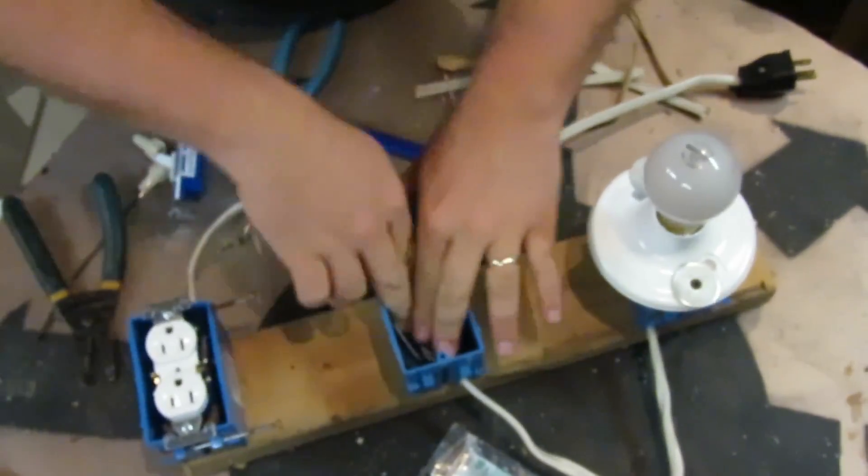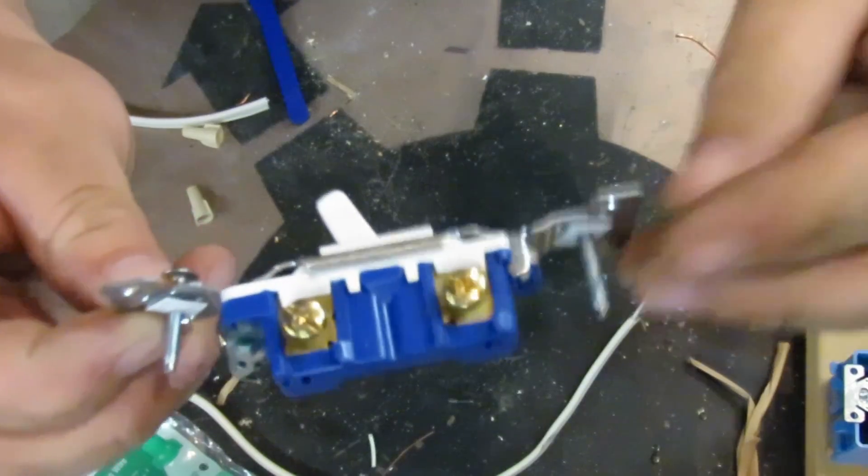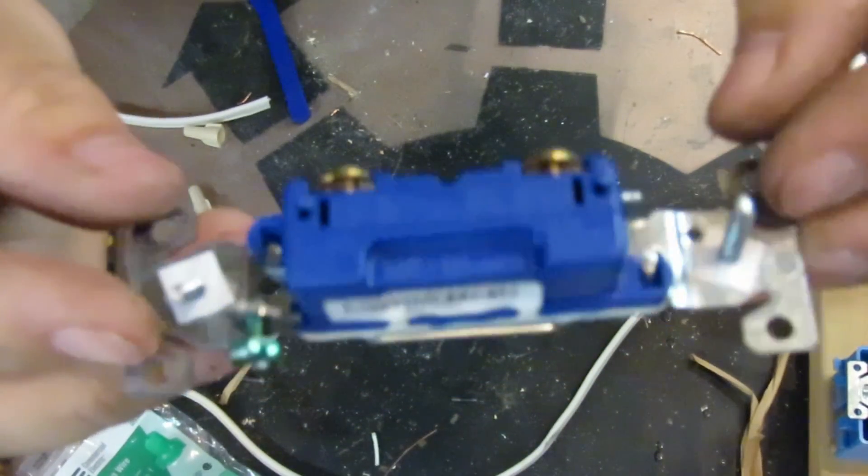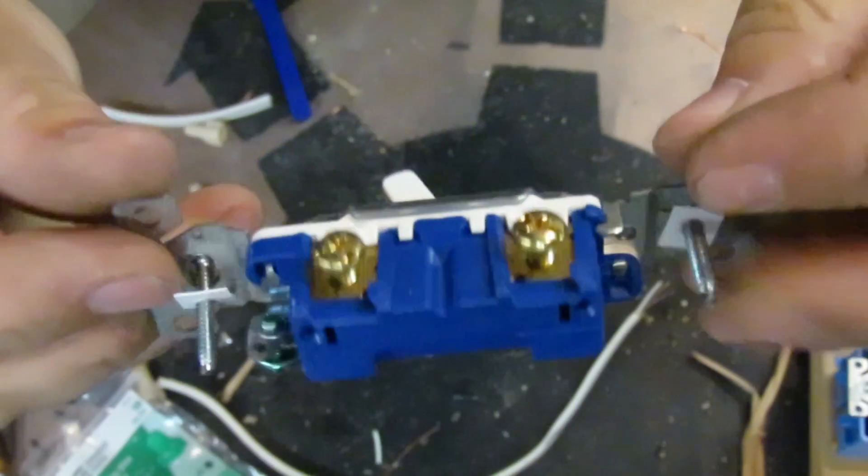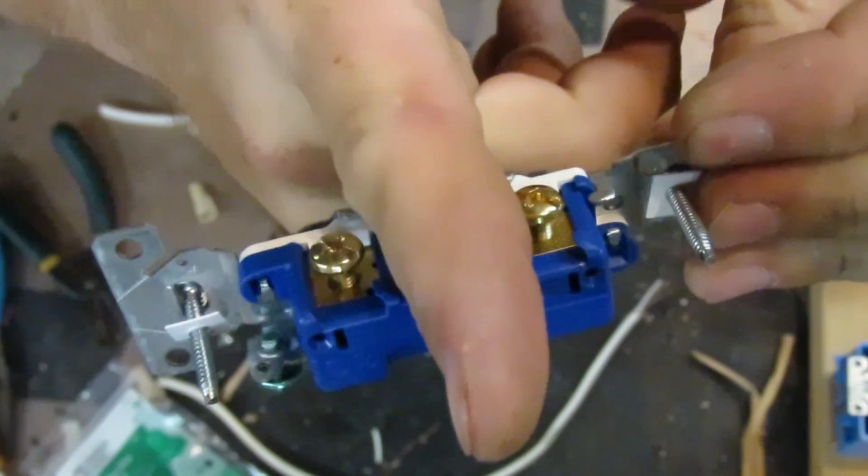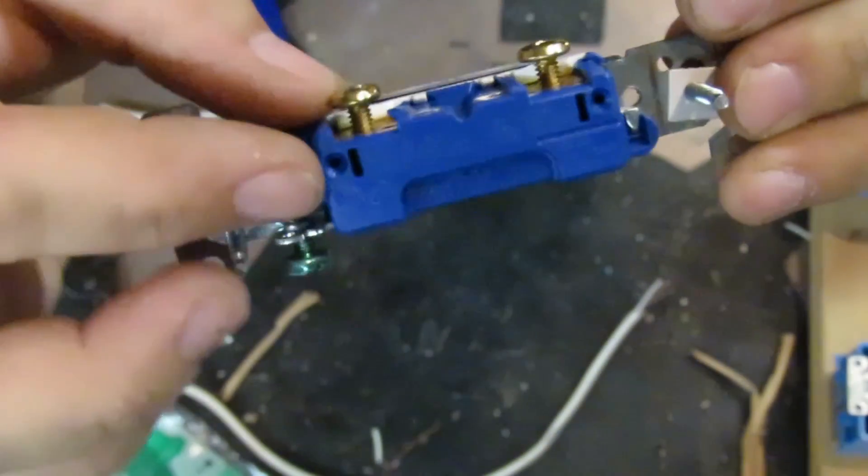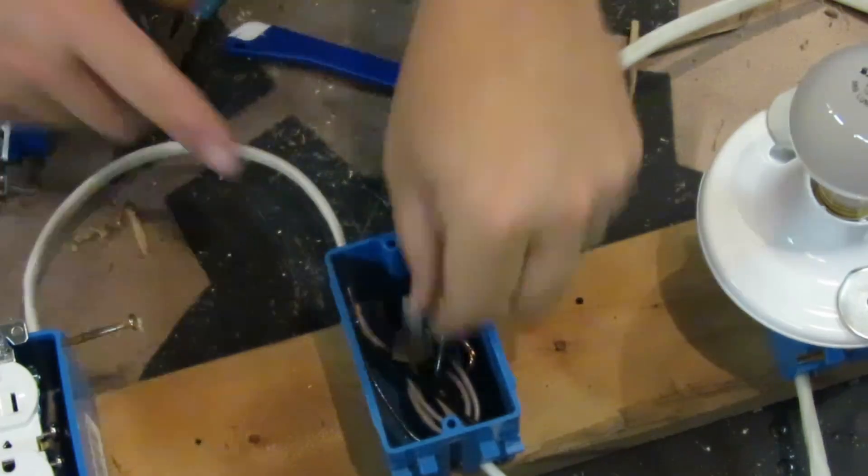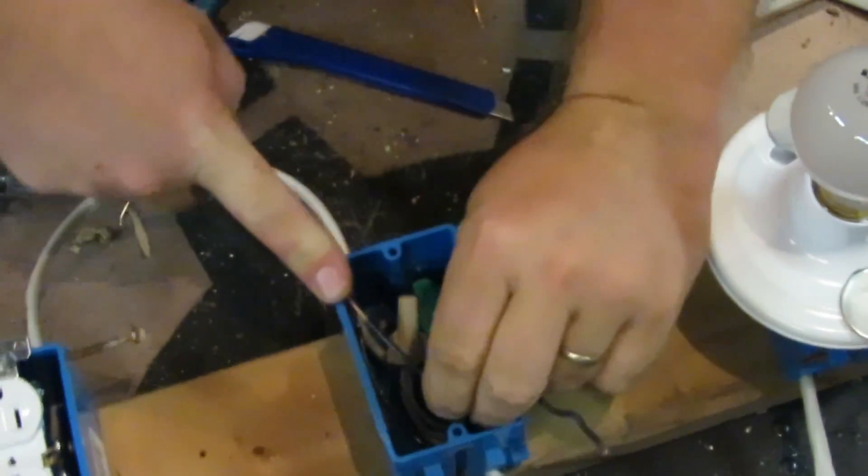This is our single-pole switch. It's got the ground screw, and the top and bottom are separate. The top has a screw and a hole, and so does the bottom.